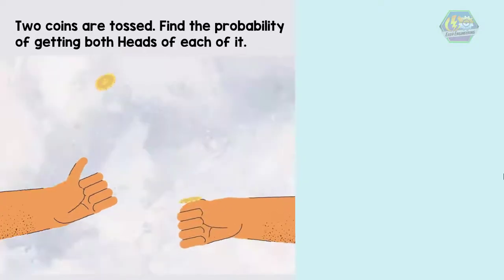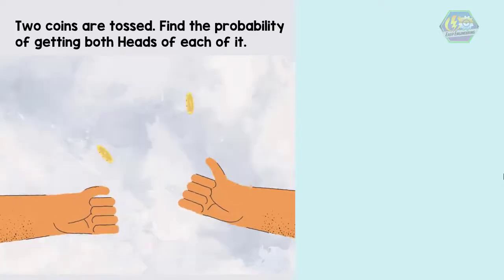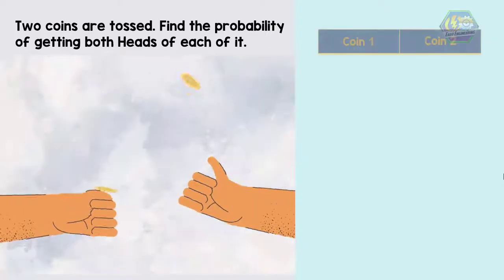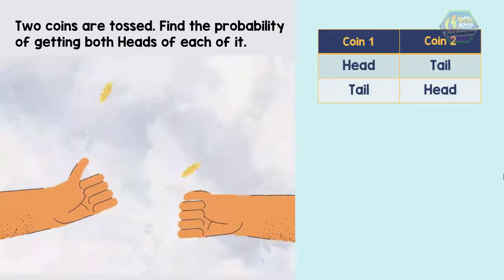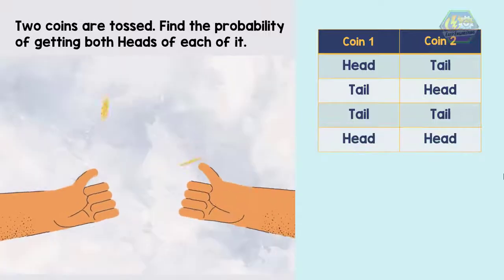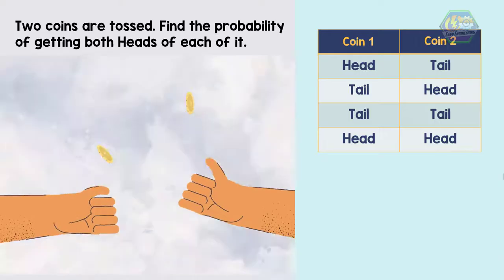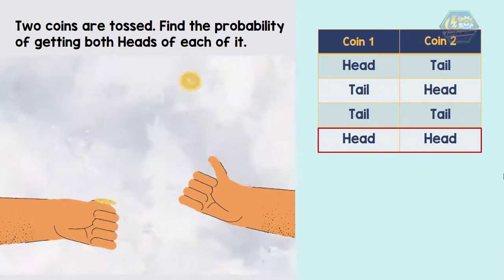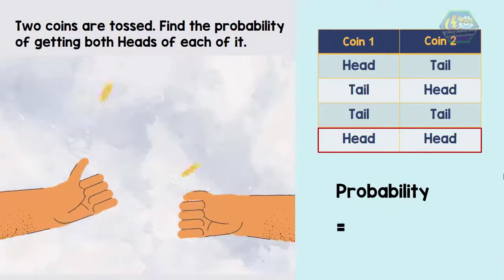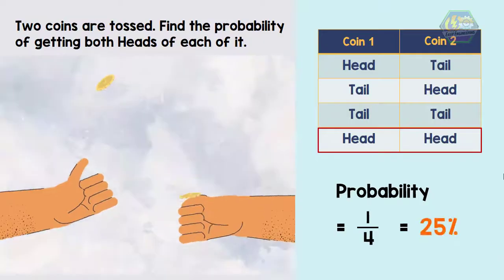Two coins are tossed. Find the probability of getting heads on both. Let's write down the possible outcomes: head-tail, tail-head, tail-tail, and head-head — that makes four possible outcomes. We can only have one outcome where both coins show heads, therefore the probability is 1 divided by 4, or 1/4, which is 25%.